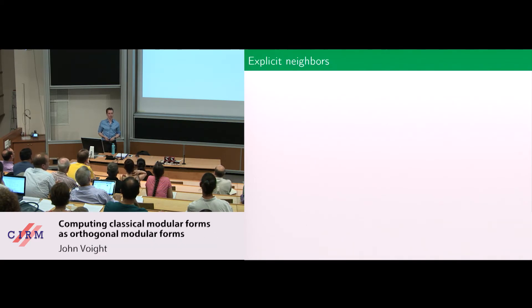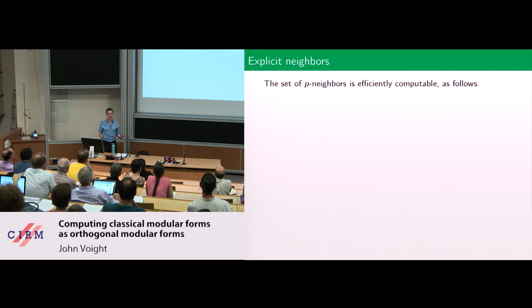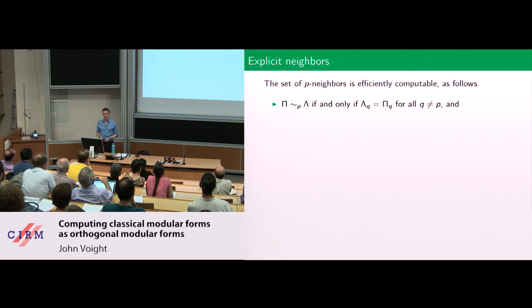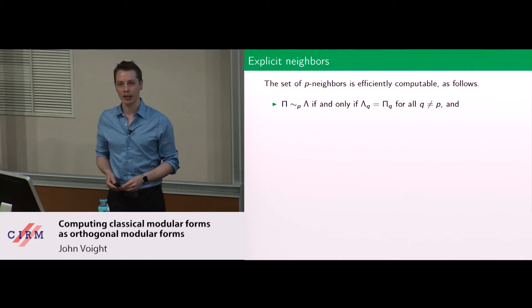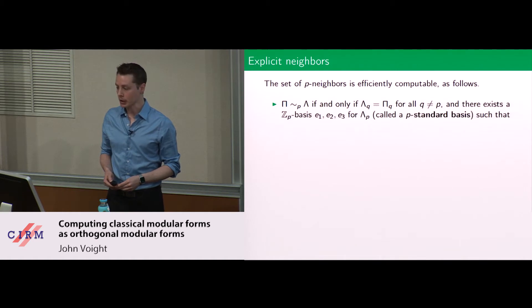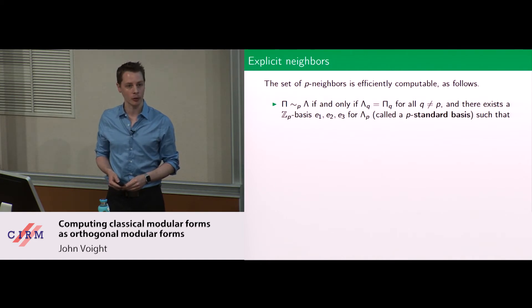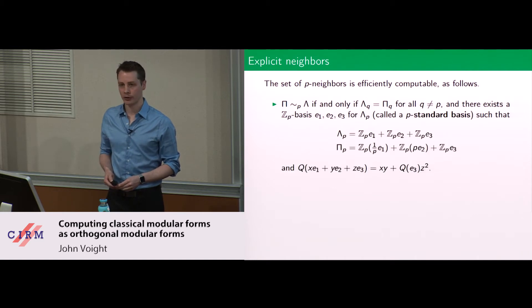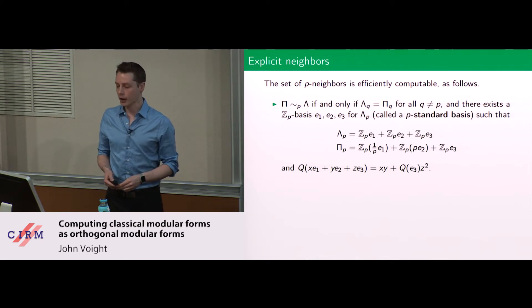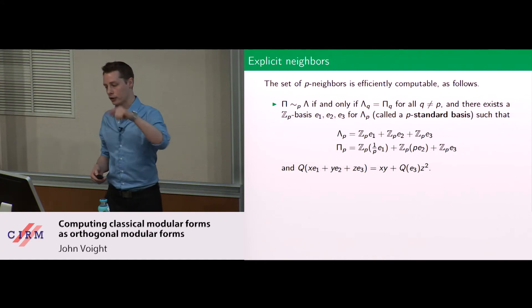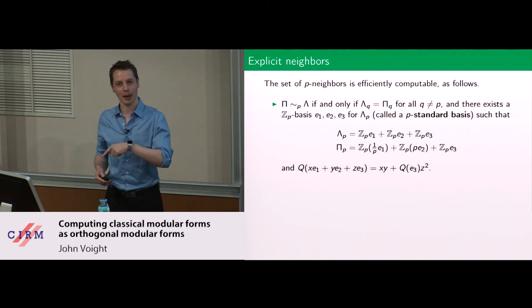How do you compute neighbors and make this effective? Here are two equivalent ways to think about neighbors. The first: pi is a p-neighbor of lambda if and only if lambda and pi are the same lattice at all primes q not equal to p, and there is a p-standard Z_p basis for lambda_p satisfying: E1, E2, E3 is a Z_p basis for lambda_p, and pi_p is spanned by E1/p, p*E2, E3. You see the intersection — you lose E2 but gain in E1. That's an isometry of the quadratic space if you've normalized your quadratic form over Z_p to look like xy plus z-squared.